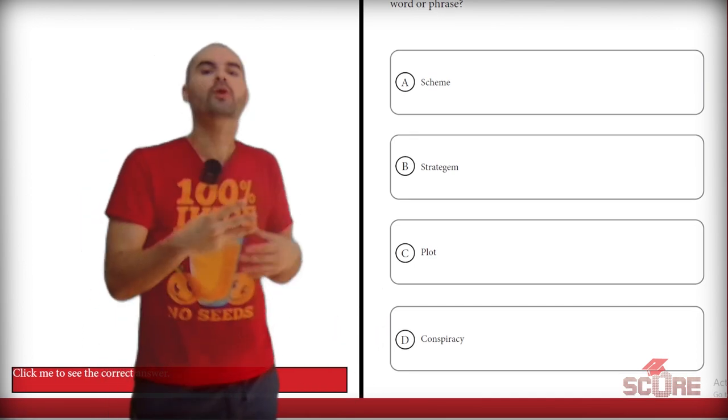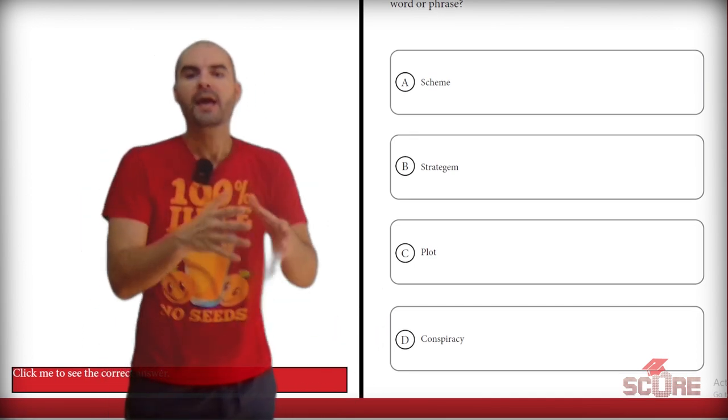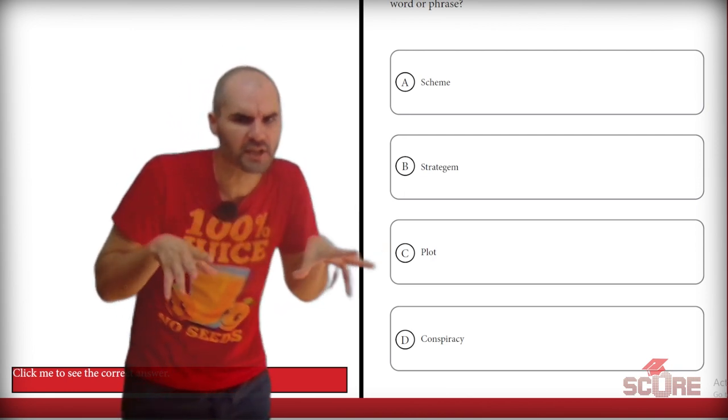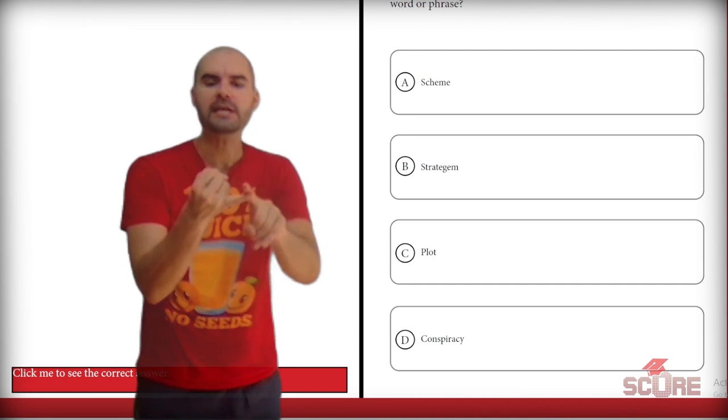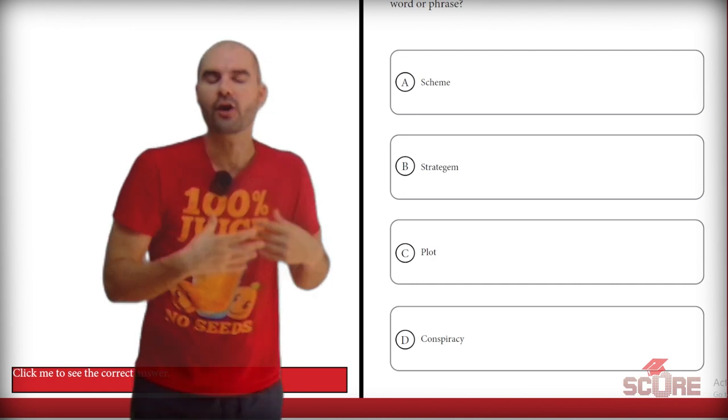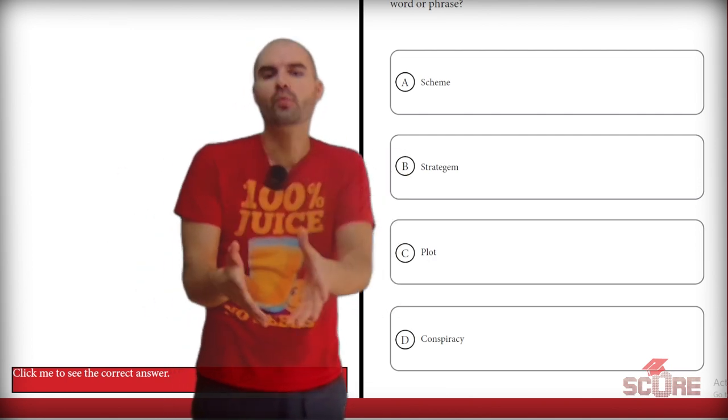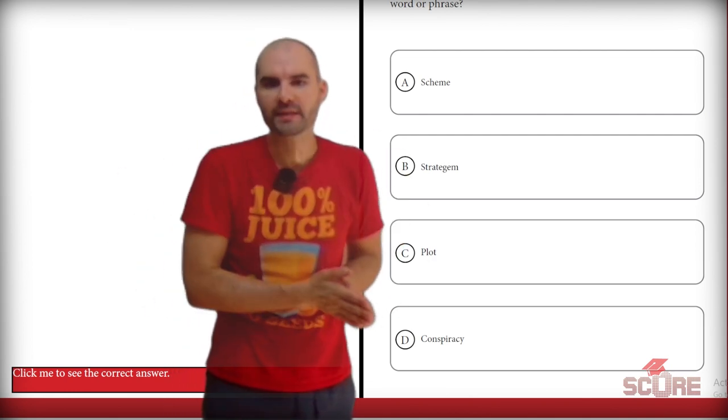And again, three of these words have something in common. That is, they're all sort of negative or imply some sort of shadowy dealings in the background. Those would be scheme, plot, and conspiracy. Whereas a stratagem could just be a strategy, like a sort of general plan. And so that's the one I'm going to mark. B is the correct answer.